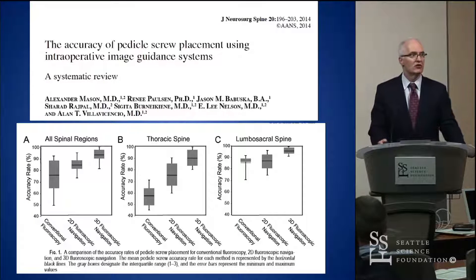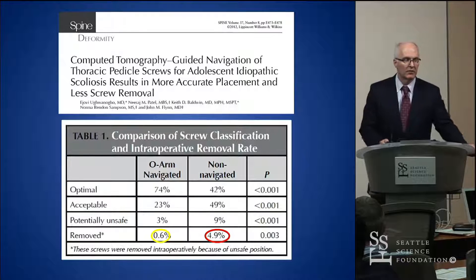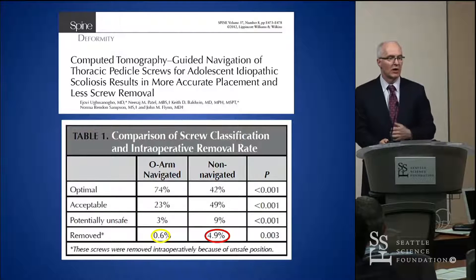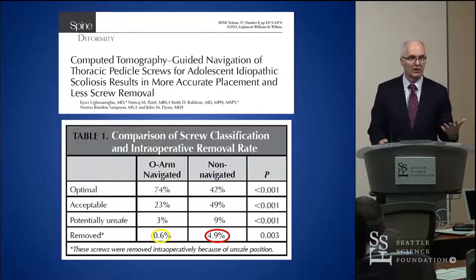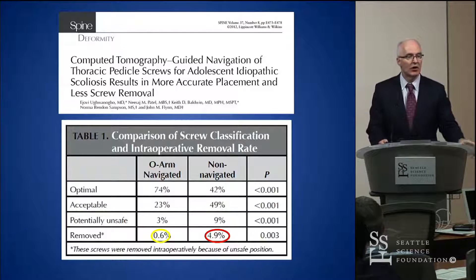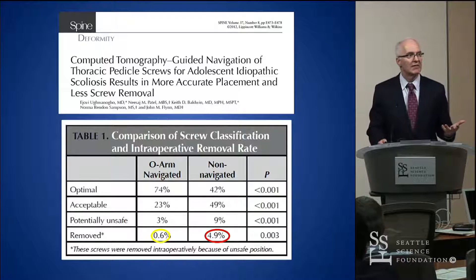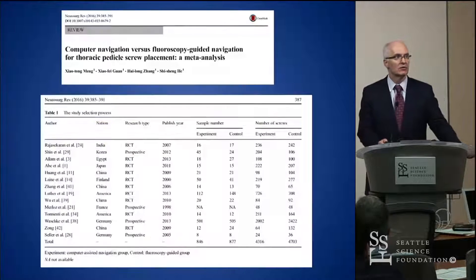The thoracic spine is our biggest challenge. There's a great study out of Children's Hospital of Philadelphia where some surgeons chose to use navigation and some didn't — all doing similar AIS cases, all getting check spins afterward. Those who navigated repositioned or removed 0.6% of screws, and those who didn't repositioned or removed 4.9% of their screws.